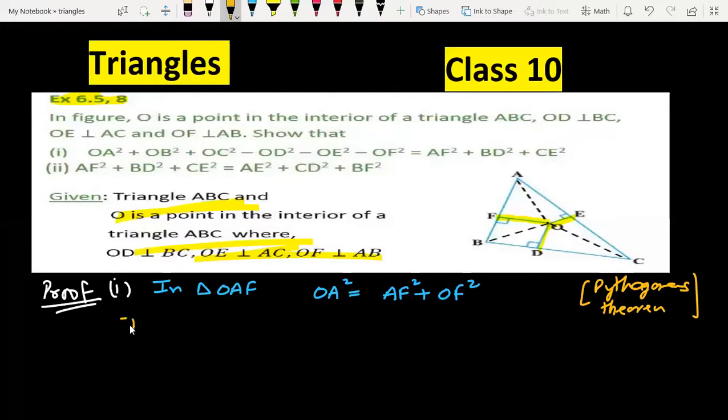We will take in triangle OBD. OB square equal to OD square plus BD square.